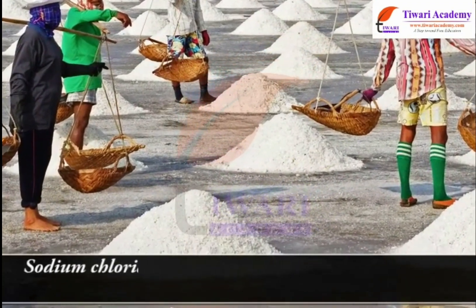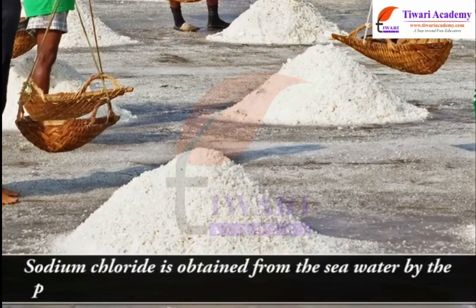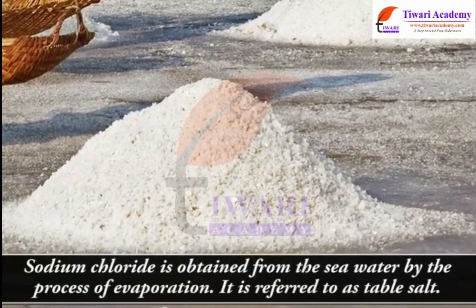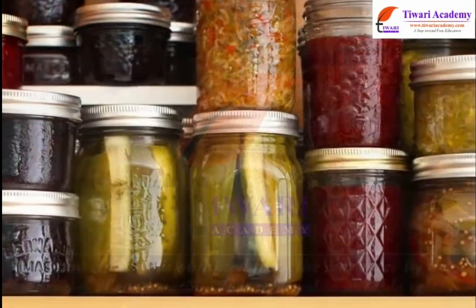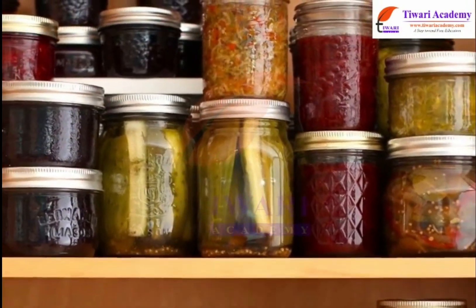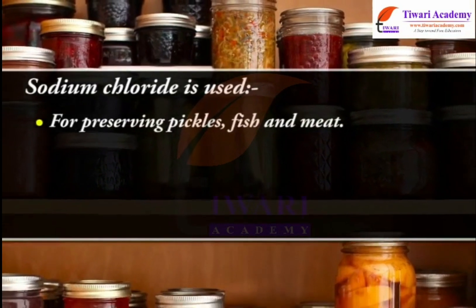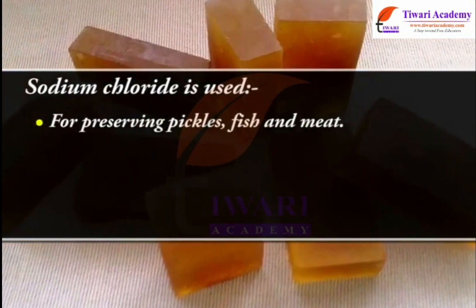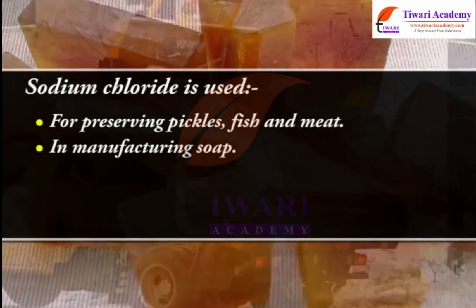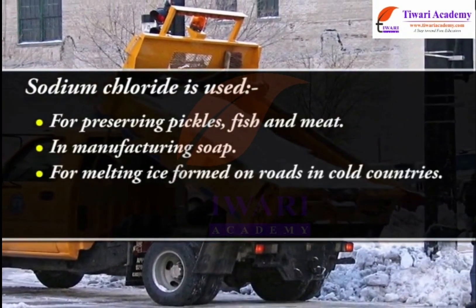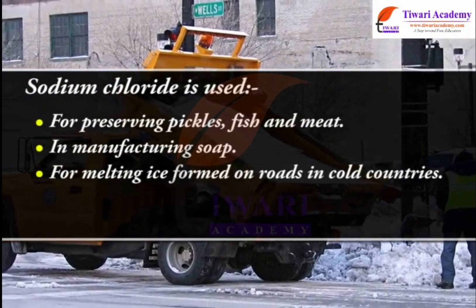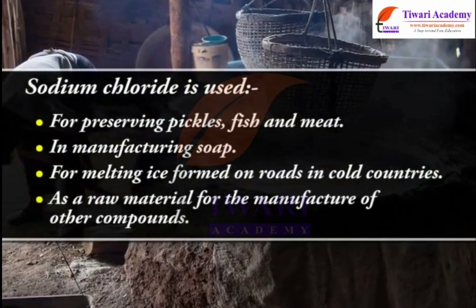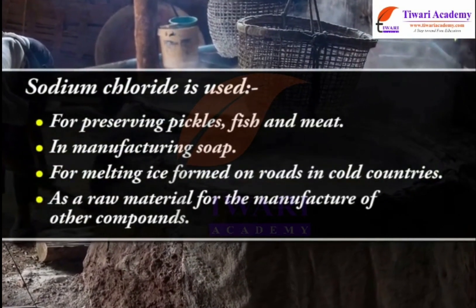Sodium chloride is obtained from sea water by the process of evaporation and is referred to as table salt. Sodium chloride is used for preserving pickles, fish and meat; in manufacturing soap; for melting ice formed on roads in cold countries; and as a raw material for the manufacture of other compounds.